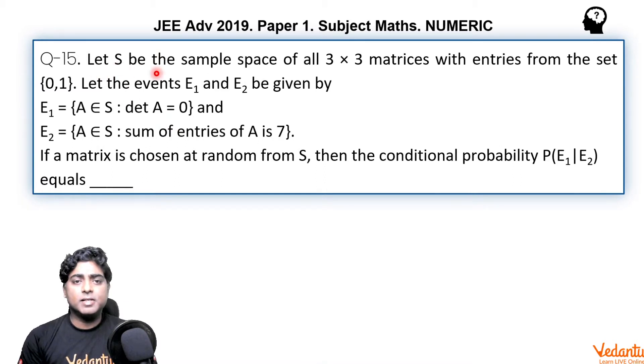It says let capital S be the sample space of all 3×3 matrices with entries from the set {0,1}. Let the events E1 and E2 be given by E1 is defined as set of all matrices belonging to the set S, capital S, such that determinant A is equal to 0.